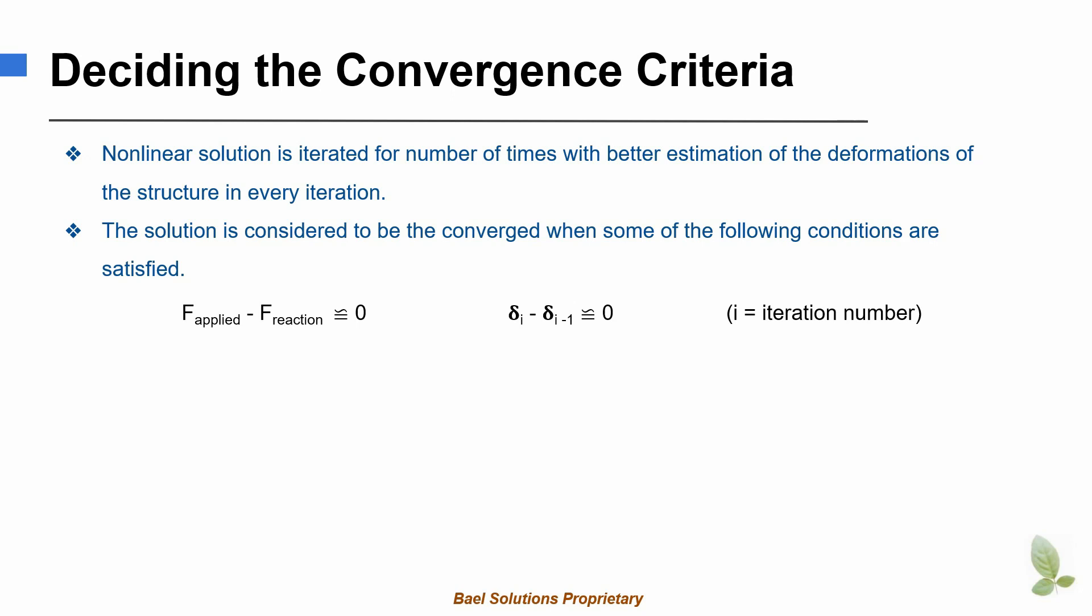For finite element models that involve shell or beam elements, additional convergence conditions are required. Third, moment residuals or the applied moments minus the reaction moments is zero. Fourth, incremental rotation, the difference between the rotations in the structure in the two consecutive iterations is zero.